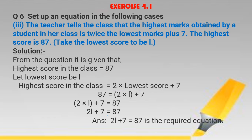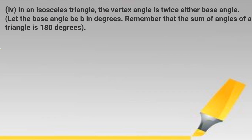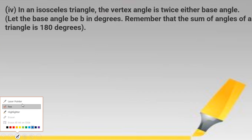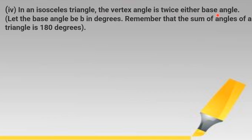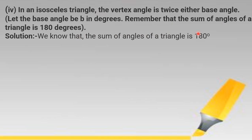Let us take one more example. In an isosceles triangle, the vertex angle is twice either base angle. Let the base angle be B, denoted by the variable B in degrees. Remember that the sum of angles of a triangle is 180 degrees. The given condition is that the sum of angles of a triangle is 180 degrees.